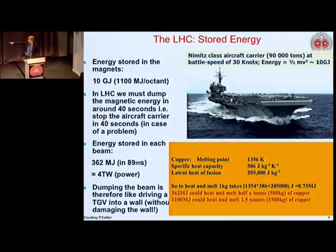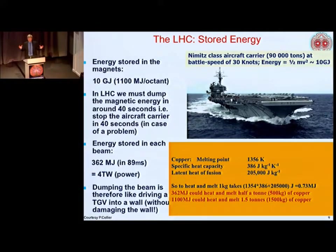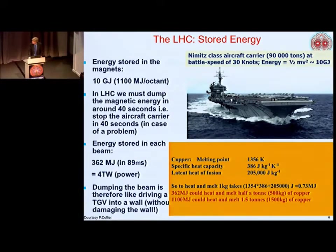If you were to dump the beam, that energy could heat half a ton of copper — 360 megajoules could completely melt half a ton of copper. So when you dump these beams, it's not just a case of throwing it into a lump of copper. You've got to do something much more clever than that.